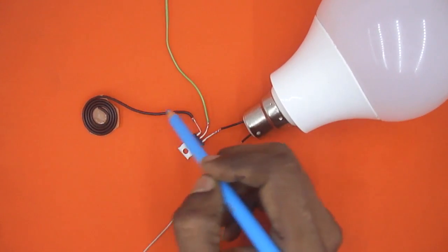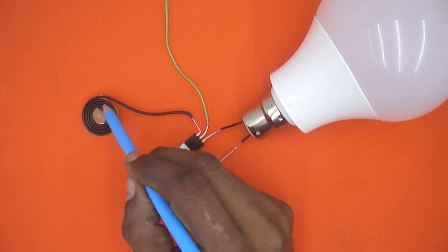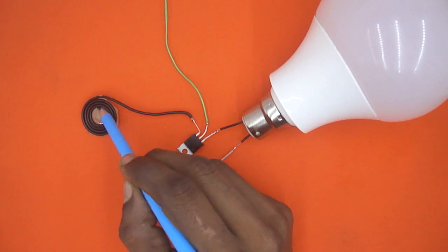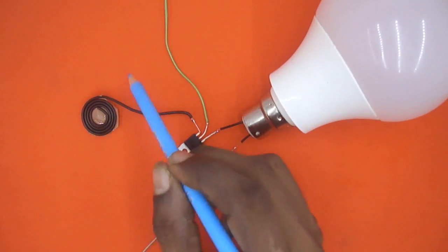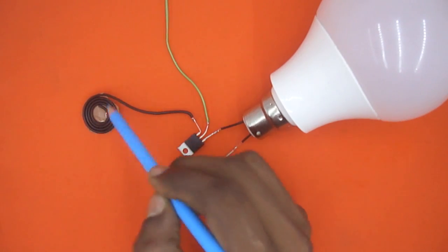You must take care that there must not be any naked part of metallic wire on this area. Otherwise, you may get shock while you will touch it. This ring will work as a touch sensor.